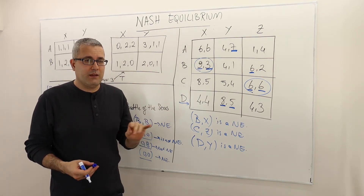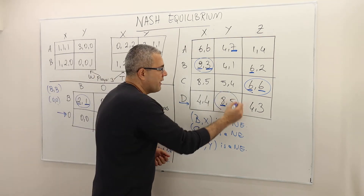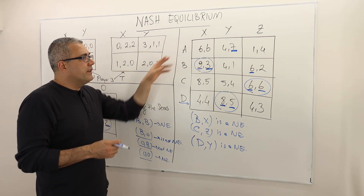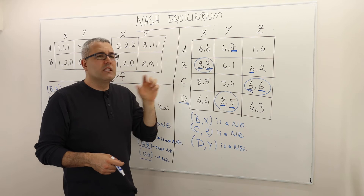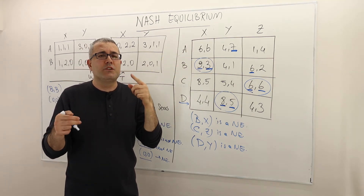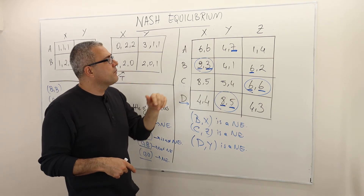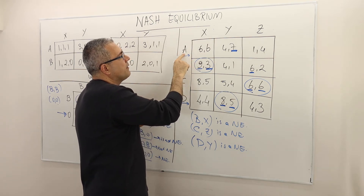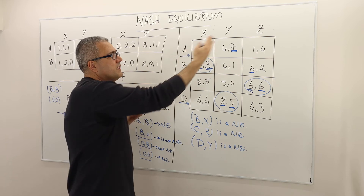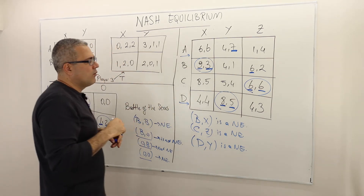Later we're going to talk about mixed strategies, but forget about them for now — these are the only Nash equilibria in pure strategies. By the way, there are two common mistakes students make with this best response analysis on the matrix. First, the first numbers always belong to the first player and the second numbers to the second player — students sometimes mix them up and end up with the wrong Nash equilibrium. Second, when finding player two's best response, students sometimes compare the first player's payoffs instead of the second player's payoffs. These are serious mistakes to avoid.